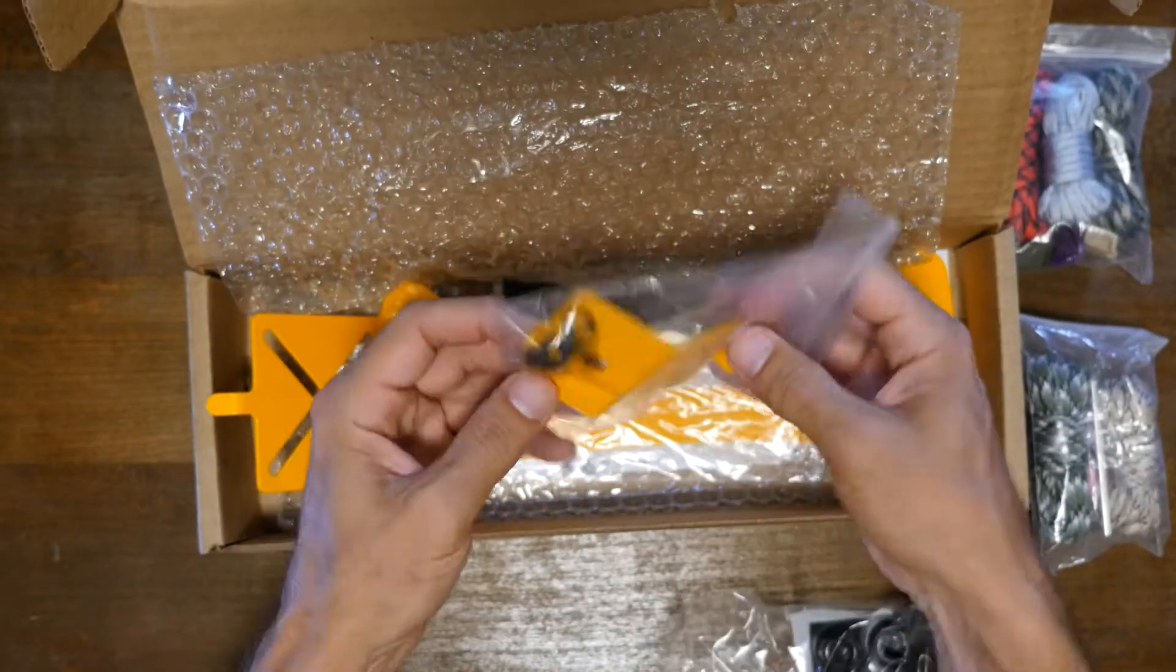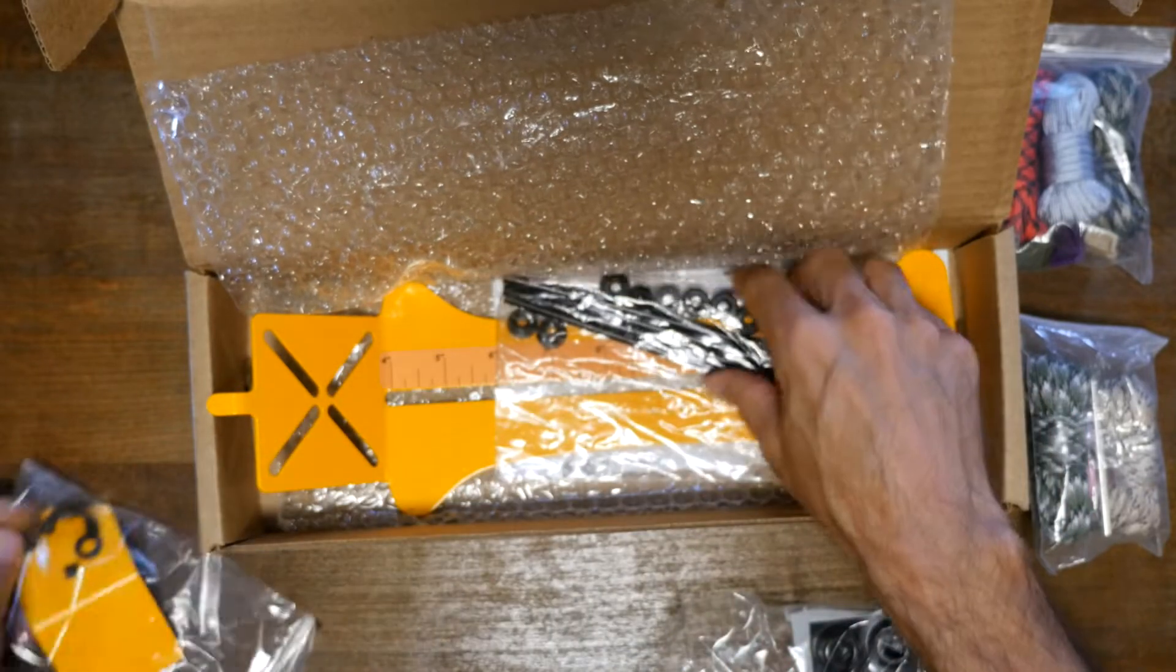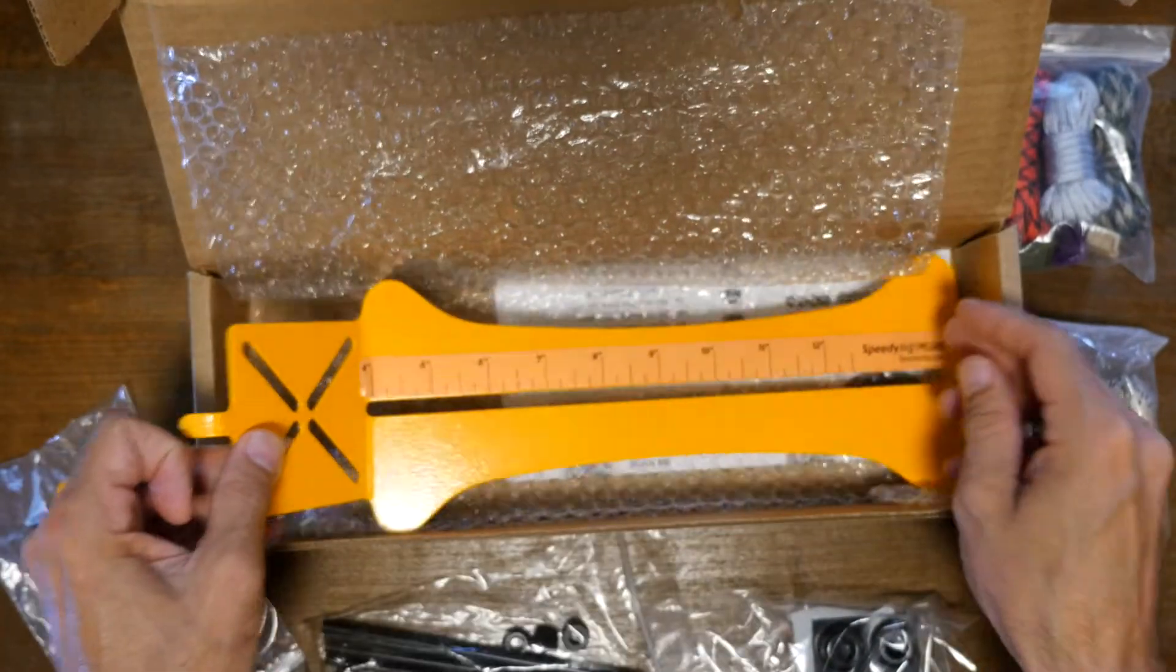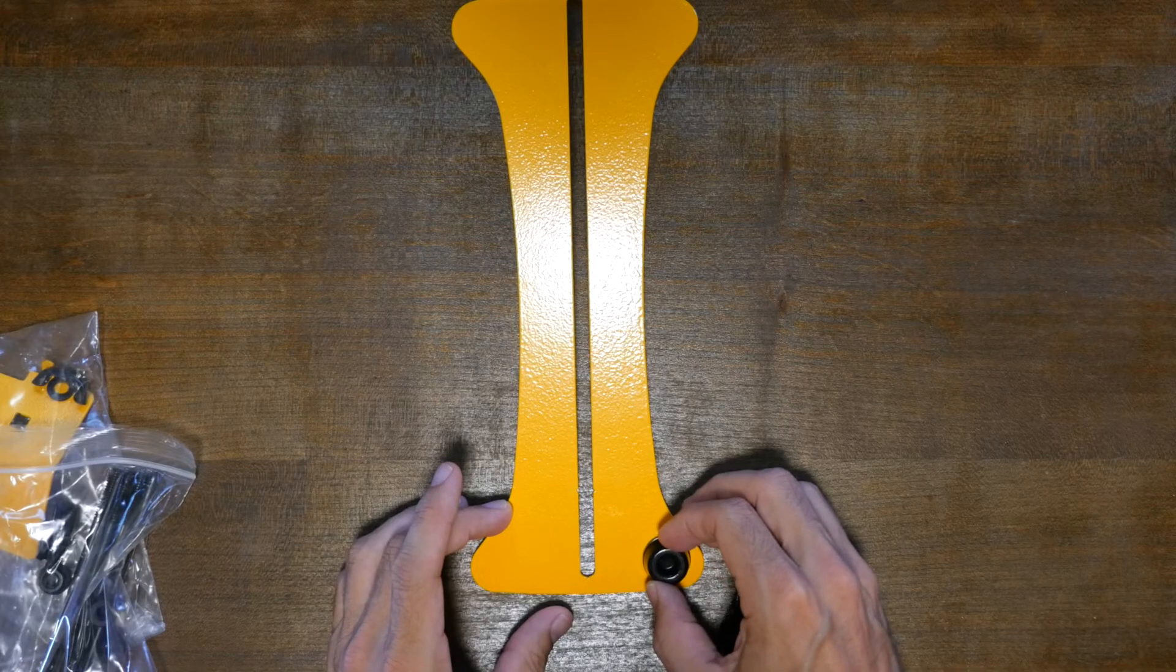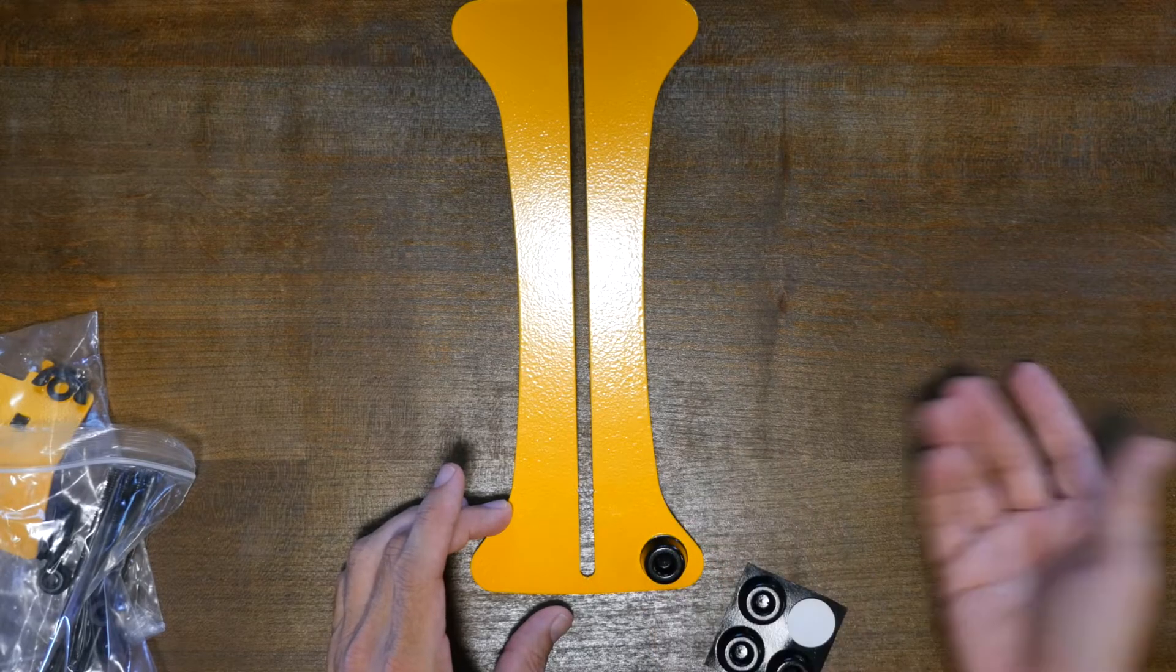The jig required a bit of assembly when it arrived, but it was super easy and straightforward. The first part of the assembly was to attach rubber bumper feet to the bottom. They were easily attached and I was surprised at how strong the adhesive was.